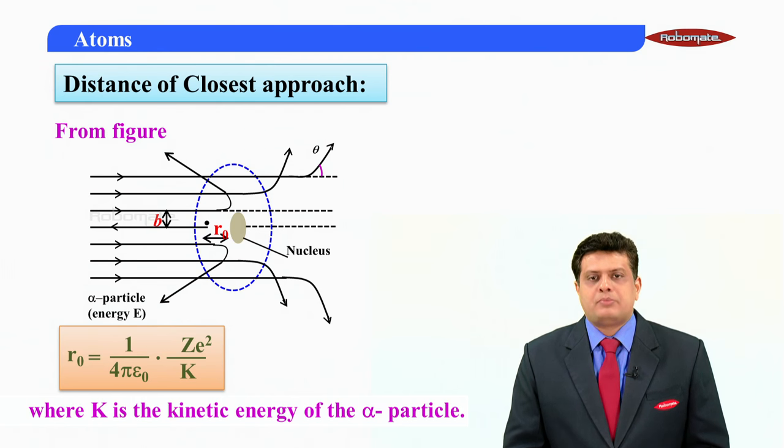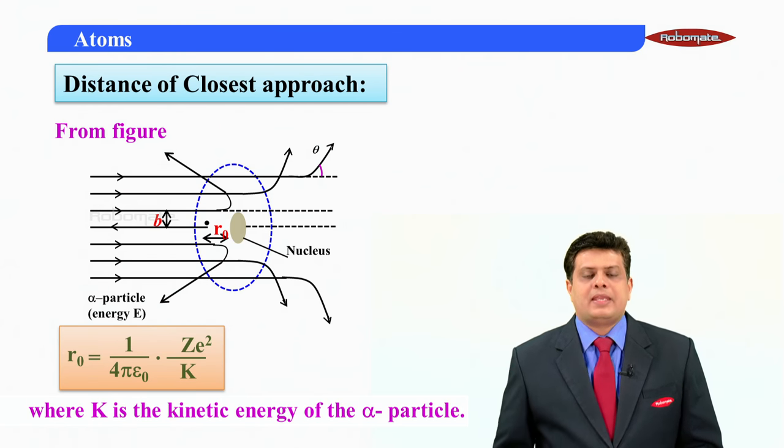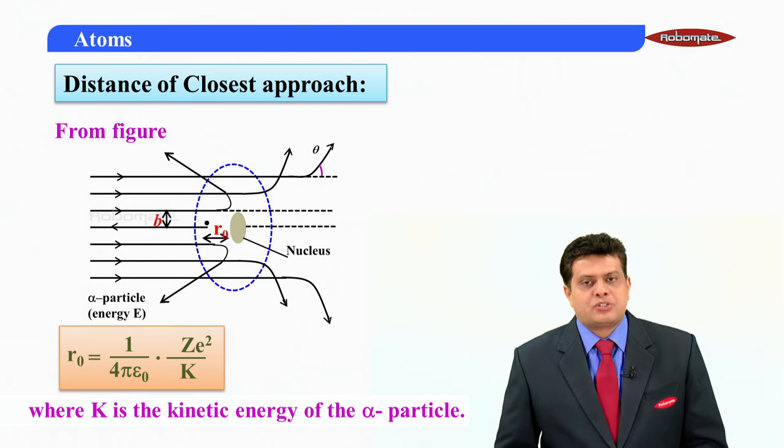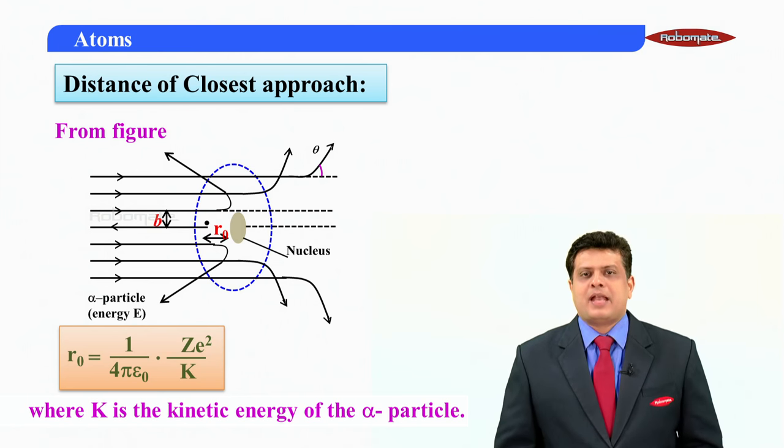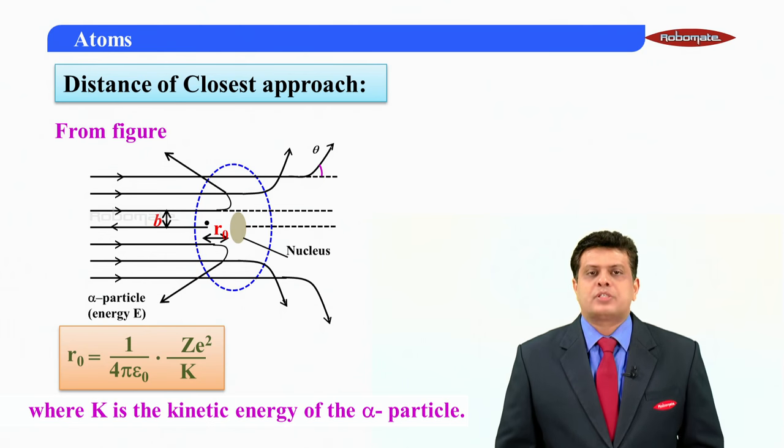Let me repeat it, 1 by 4 pi epsilon-not, Z-e-square divided by K. Please do understand that. Instead of K, I can always take it as half mv-square, where K is nothing but kinetic energy. This is the distance of closest approach for you.